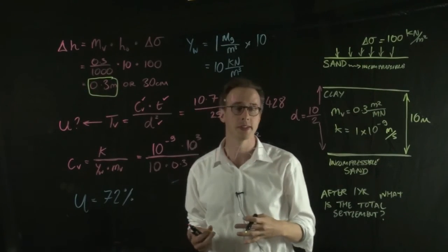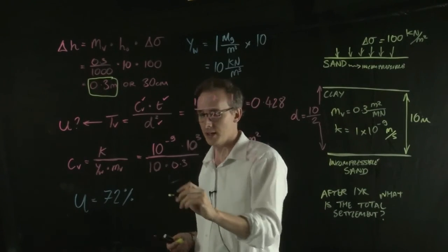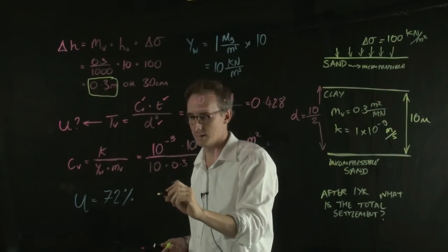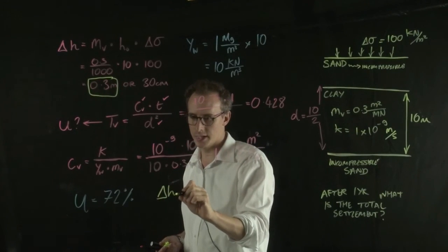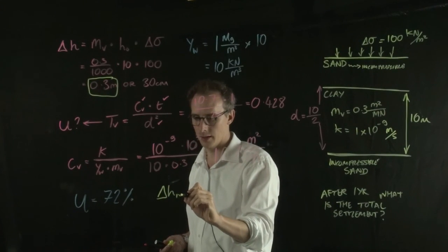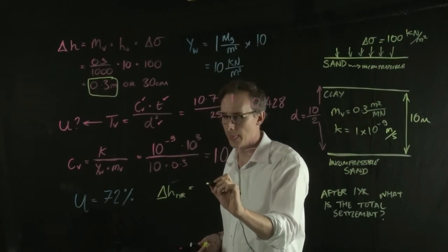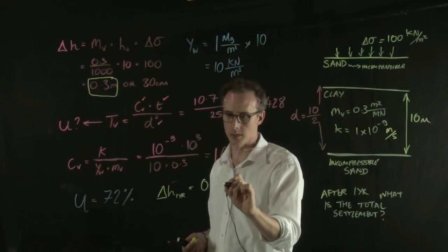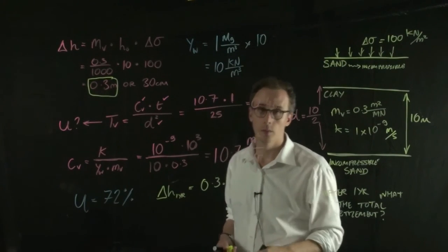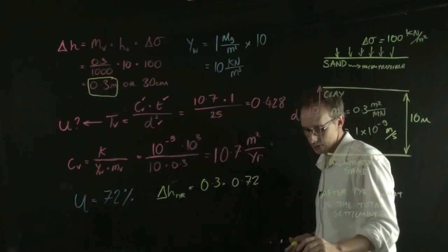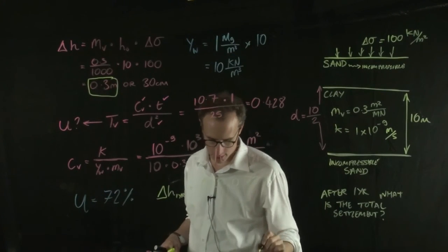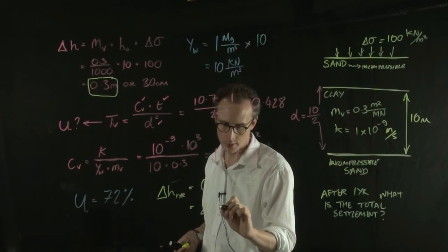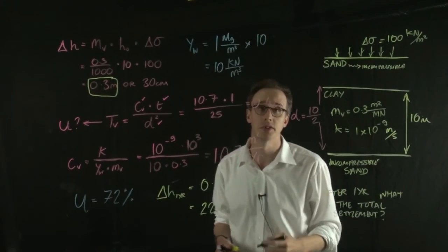So the total settlement after one year, in terms of metres, is equal to 72% of 0.3 metres. So delta H at one year is equal to 0.3 multiplied by 0.72, 72% of that, which comes out at 22 centimetres or 0.22 metres.